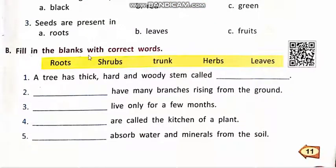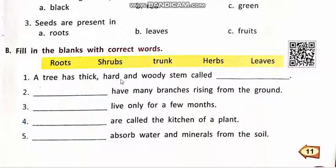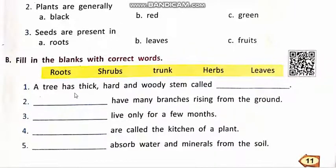B. Fill in the blanks with correct words. The words are: Roots, Shrubs, Trunks, Herbs, Leaves. Students, you will fill these blanks with these words. In blanks ko in words ke saath solve kerna hai. Number 1. A tree has thick, hard and woody stem called dash. The correct answer is trunk.